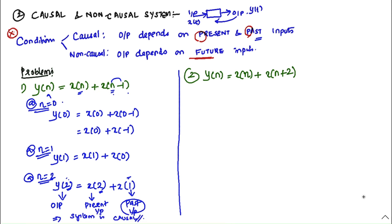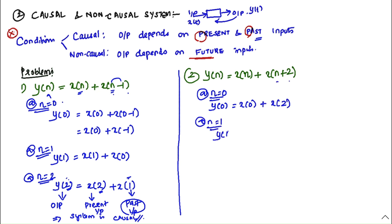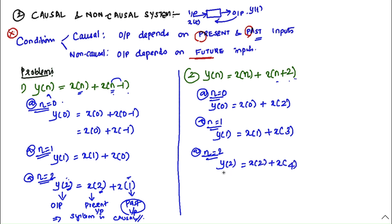Looking at the output: y(2) = x(2) + x(1). The output depends on present input x(2) and past input x(1). Since the output depends only on present and past values, it is a causal system.